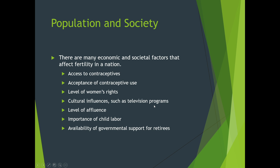Cultural influences like television also affect population size. Level of affluence matters — with more income you don't need to worry about kids taking care of you. The importance of child labor decreased as we moved from an agrarian to an industrial society, and laws were put in place to keep children in school. Availability of government support for retirees — social security, Medicare — has also really made a difference.